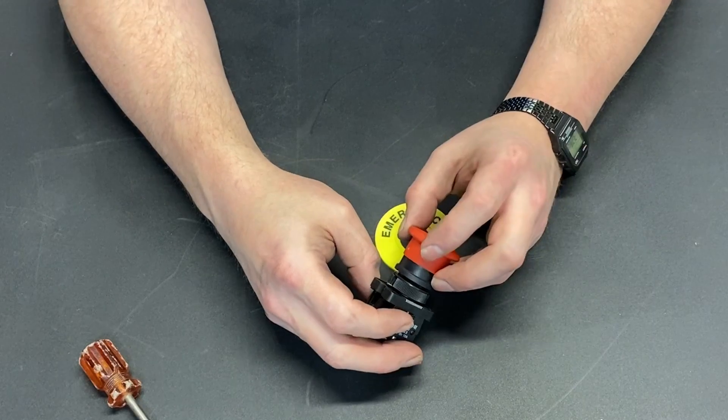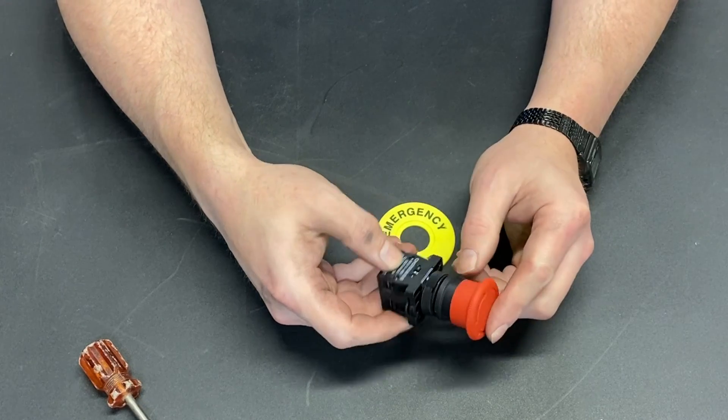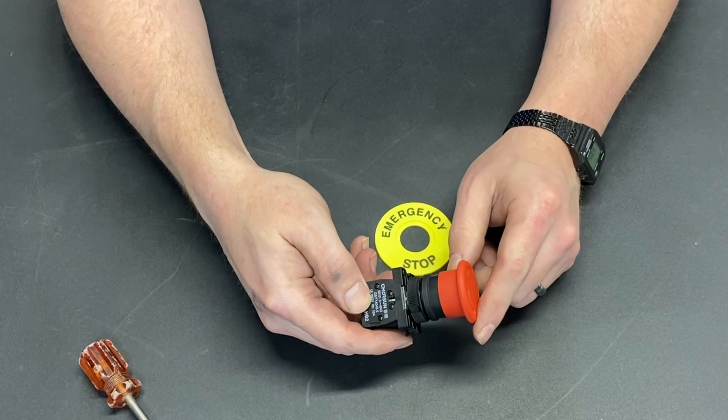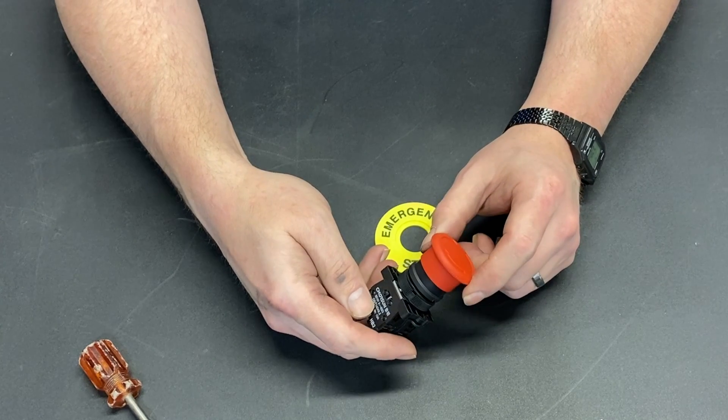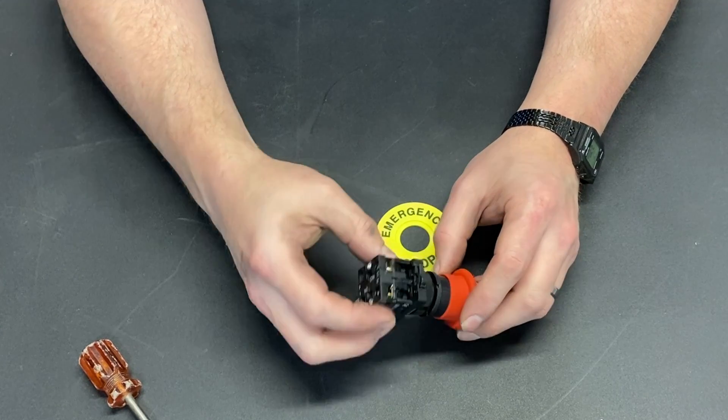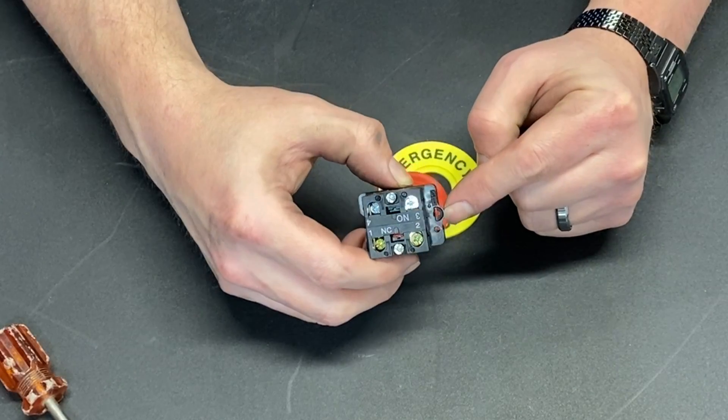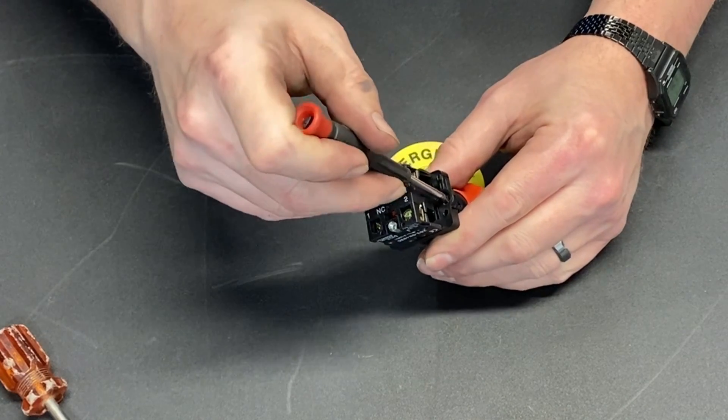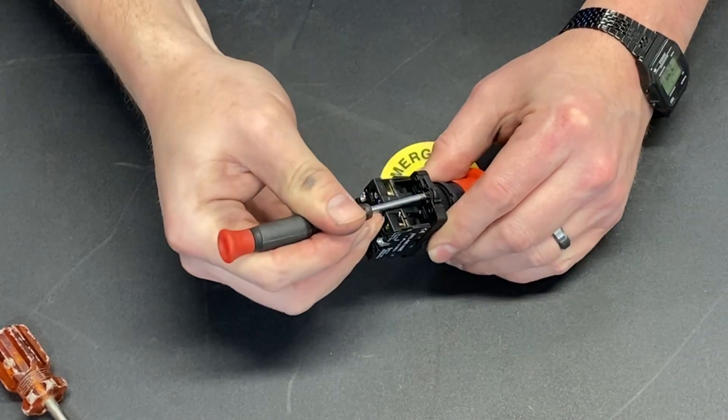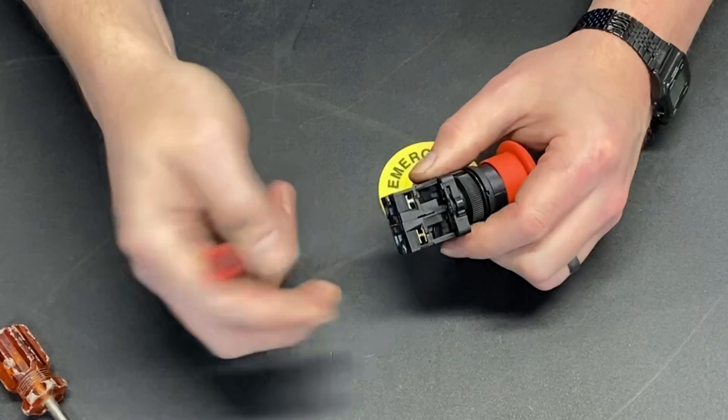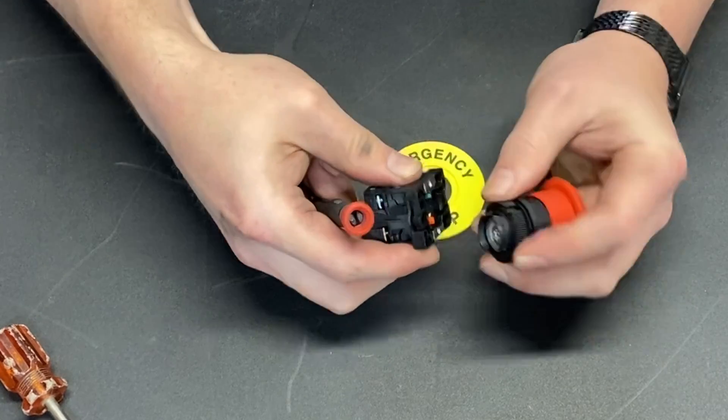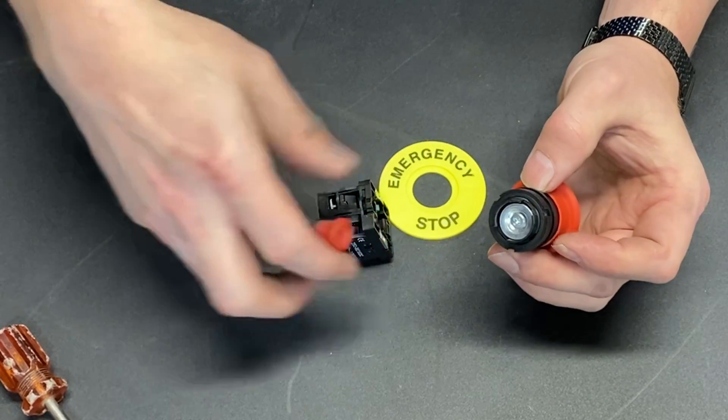So that begs the question, how do we get this main shaft separated so that you can mount this in a box? Well, it turns out it is really very simple. You see that hole right there? If you stick a screwdriver in that hole and pry, you basically release a little catch and now this pops out.